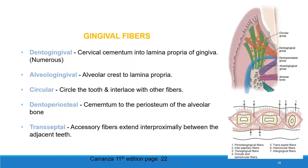Gingival fibers. The gingiva consists of five types of fibers: dentogingival, which extends from the cervical cementum to the lamina propria of the gingiva; alveologingival fibers, which extend from the alveolar crest to the lamina propria; circular fibers, which encircle the tooth and interdigitate with other fibers; dentoperiosteal fibers, which extend from cementum to periosteum of the bone; and transseptal fibers, which are accessory fibers extending interproximally between two adjacent teeth.